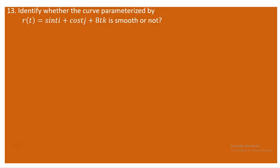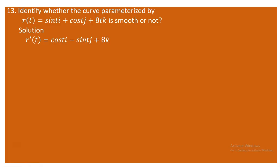You will never face any sharp corner on a smooth curve. So let's check whether the derivative can be zero. The derivative of r with respect to t is cos(t)i − sin(t)j + 8k. For any t value you substitute, you are unable to make the entire expression equal to zero.